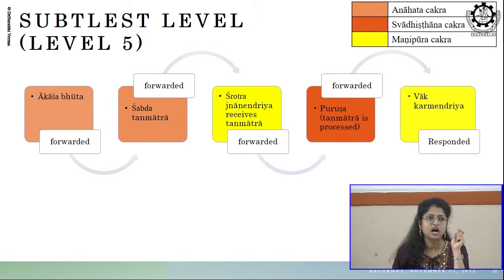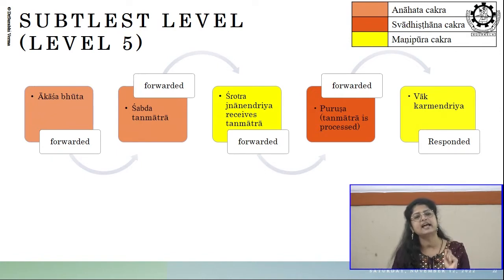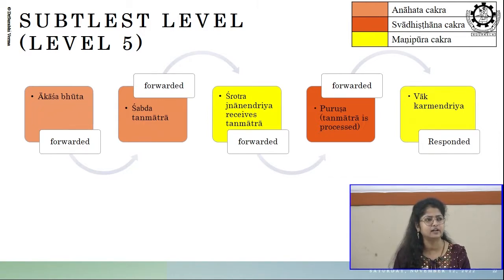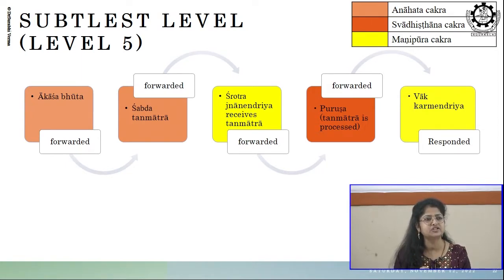One narration related with this understanding of marmabhedi shabdabha comes from the Kathopanishad. Anyone who has heard about Upanishads can understand this story. Kathopanishad is an Upanishad in which there is the story of Yam and Nachiketa — the Yam-Nachiketa samvad. Yam is supposed to be the deity of death — mrityu ke devata ke roop mein unhe samjha jata hai — Yamaraj.